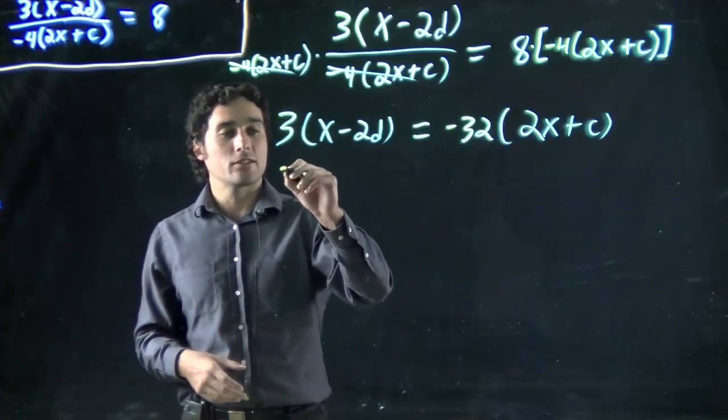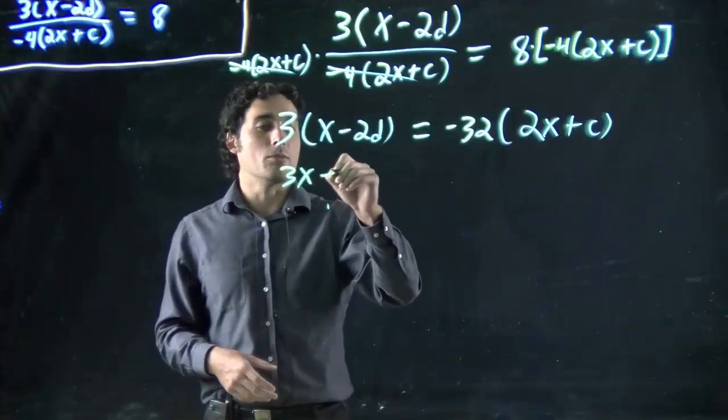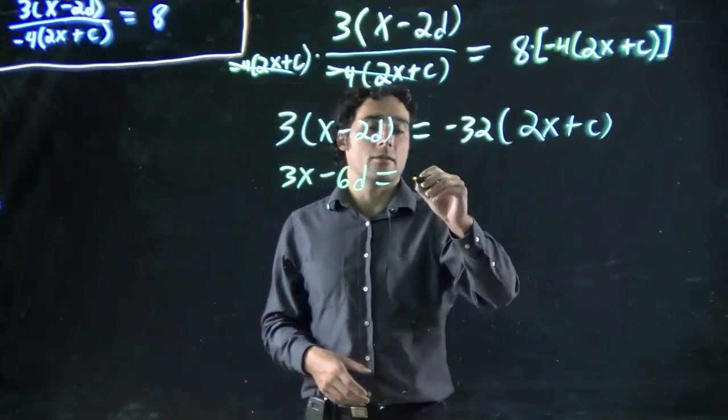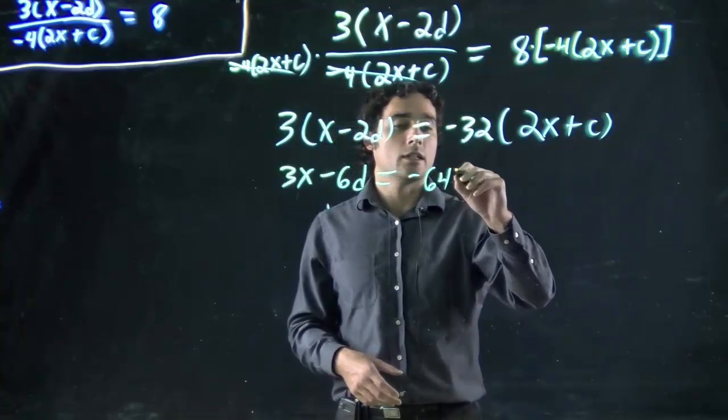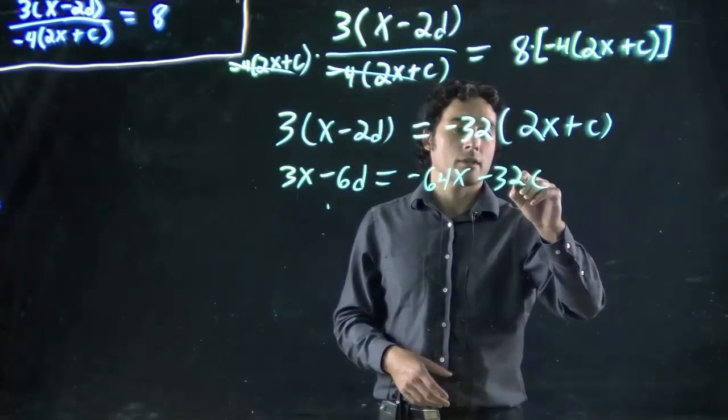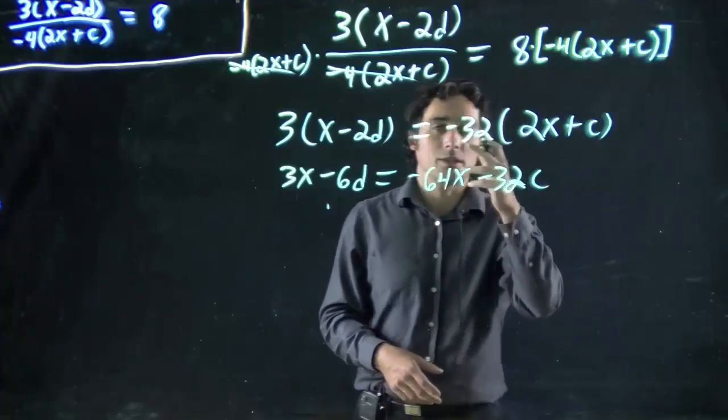So 3 times x, 3x, and then also multiply the other term. So we have minus 6d, we have minus 64x, and minus 32c. As always, a minus and a plus becomes a minus.